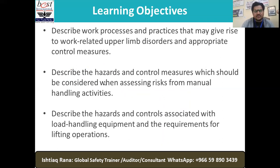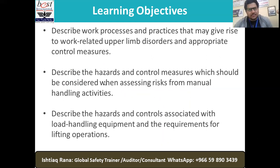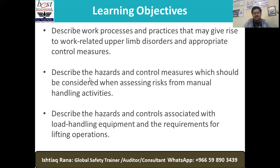The first learning objective is to learn about work processes and practices that may give rise to work-related upper limb disorders — we call it WRULD — and appropriate control measures. From element five up to eleven, we will be discussing hazards, their associated risks, and control measures, meaning the complete hierarchy of controls. The second learning objective is how to describe the hazards and control measures, especially those that should be considered when assessing risk from manual handling activities.